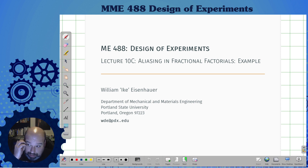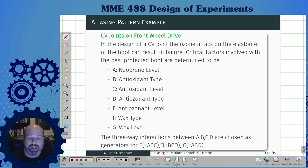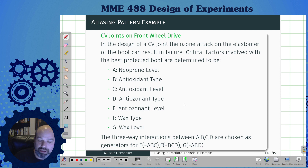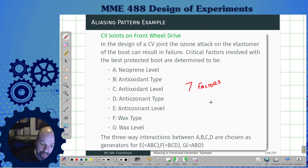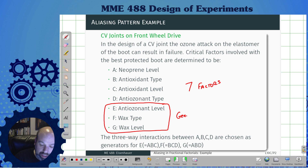This is aliasing in fractional factorials — an example. The next lecture in a couple of days will be the actual walkthrough in R, but this is just going through it by hand. In this example, I'm going to talk about CV joints on a front-wheel drive. Due to an ozone attack in the elastomer of the boot, it can result in a failure. The critical factors we've decided on are these seven factors, and we're going to choose three-way interactions to generate three of them.